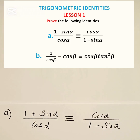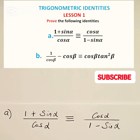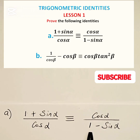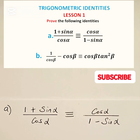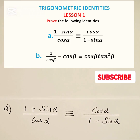In part A of this example, we are required to show that 1 plus sin alpha divided by cos alpha is identical to cos alpha divided by 1 minus sin alpha. Now let's consider the left-hand side of that trigonometric identity.